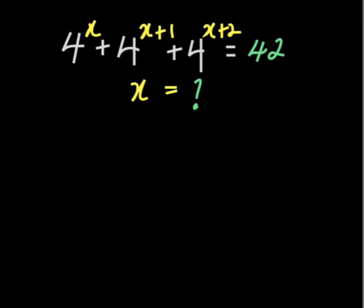Hello everyone, this is Esomnoff from Limass and in this lesson we will solve this problem before us which is 4 to the power of x plus 4 to the power of x plus 1 plus 4 to the power of x plus 2 equal to 42 and our target is to find the value of x.